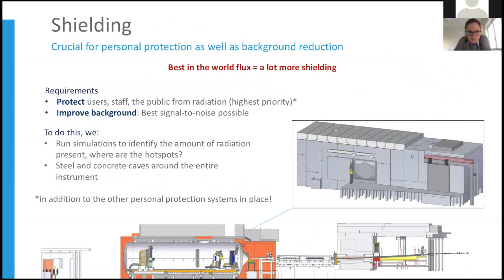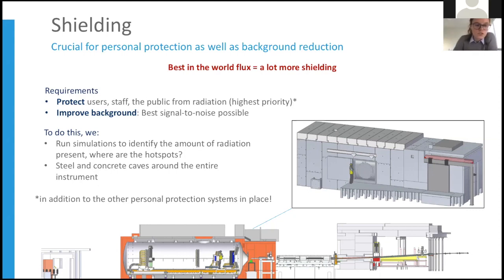Now that we have an instrument at the facility with the best flux in the world, we need significantly more shielding. This is crucial for personal protection — protecting users, staff, and the public from radiation, which is the highest priority. It also improves our signal-to-noise ratio. We run simulations to identify radiation levels and hot spots, then use a combination of steel and concrete caves around the entire instrument with heavy doors to provide the necessary shielding.